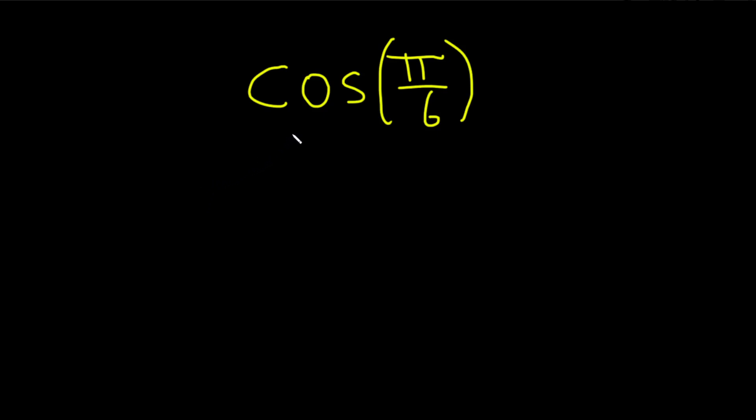Hi, in this video we're going to compute the cosine of pi over 6. Let's go ahead and go through it. Solution. To do this, you can use a triangle. I'm going to draw the triangle really quickly here. It looks something like this.